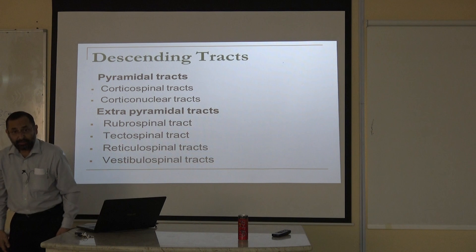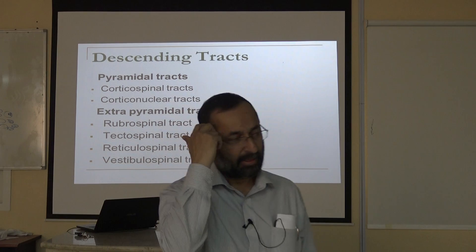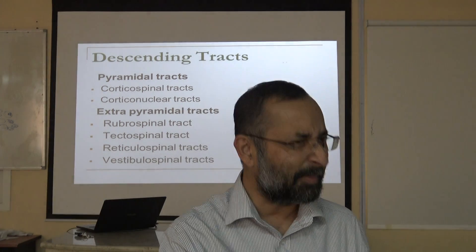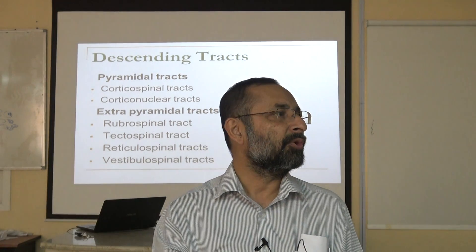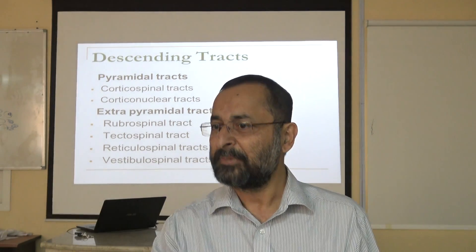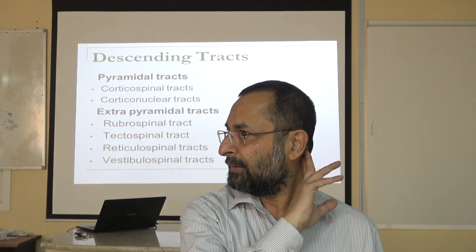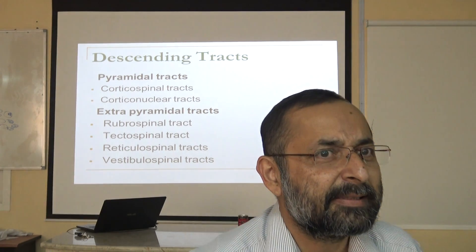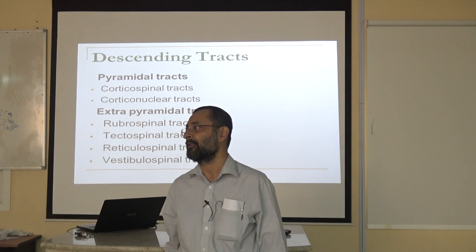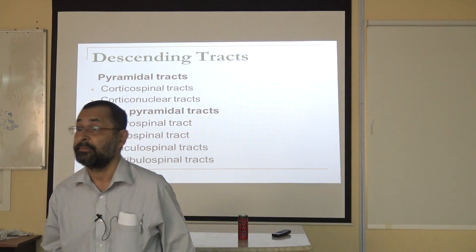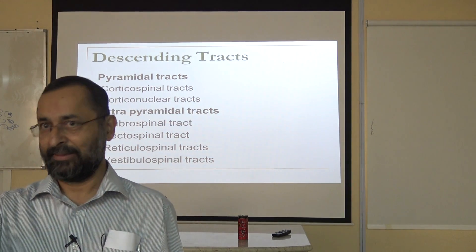Now, descending tracts — the motor system. You have done the names of these tracts in the brainstem sections. These include pyramidal and extrapyramidal tracts. First, what is a pyramid? In terms of our neurology, when I say pyramid in the brain, the answer is the medulla.